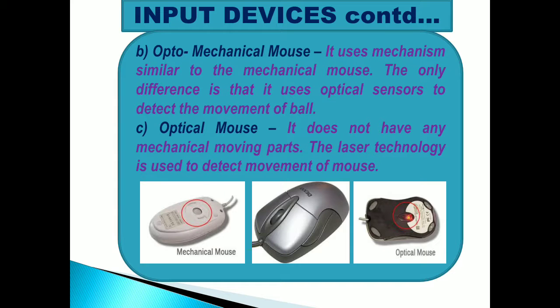The optomechanical mouse uses a mechanism similar to the mechanical mouse but uses optical sensors to detect the movement of the ball. The optical mouse, which is most commonly used nowadays, does not have any mechanical moving parts — laser technology is used to detect the movement of the mouse.